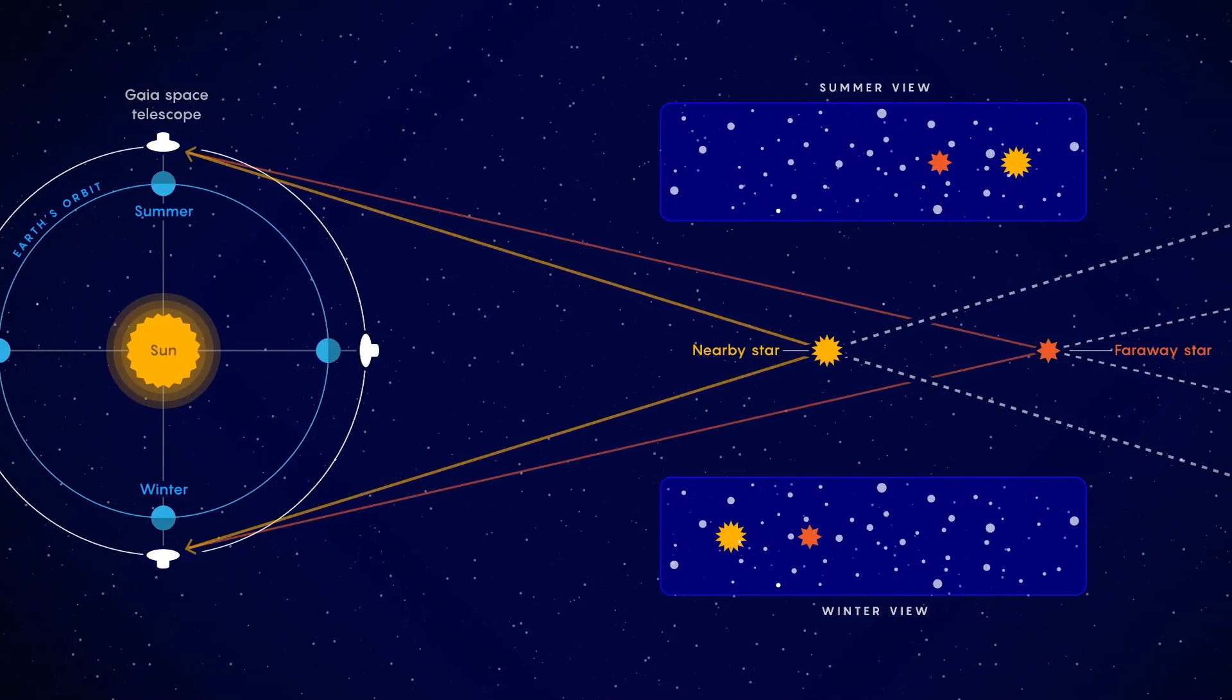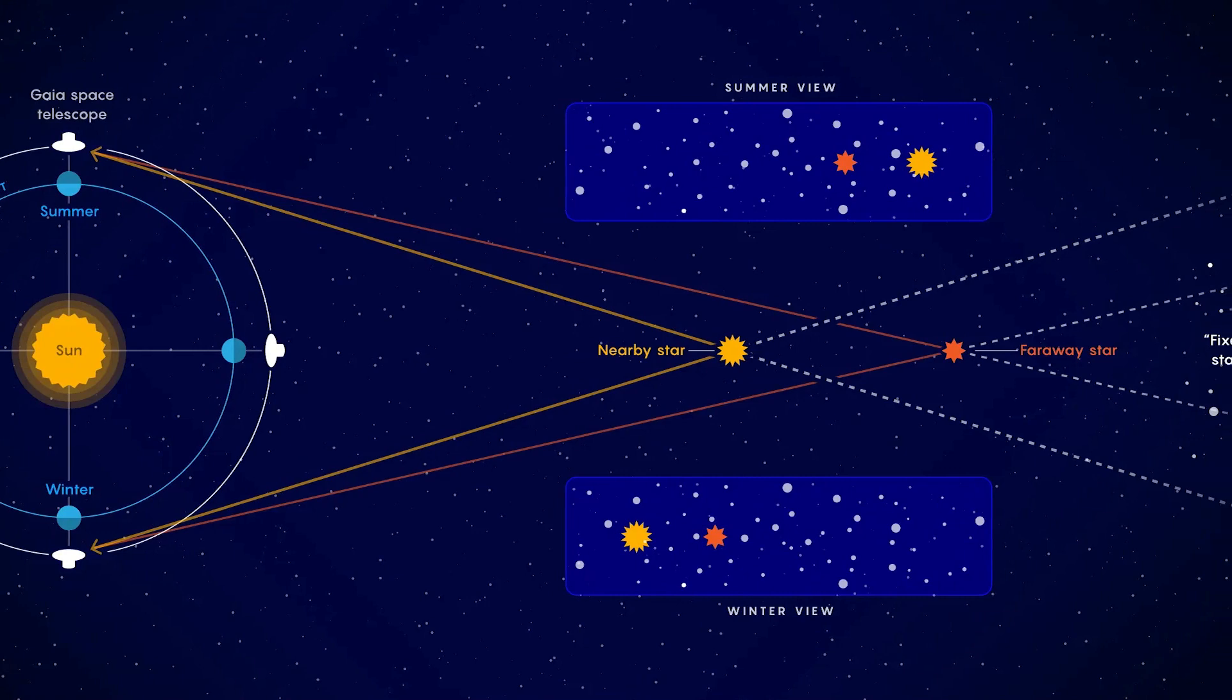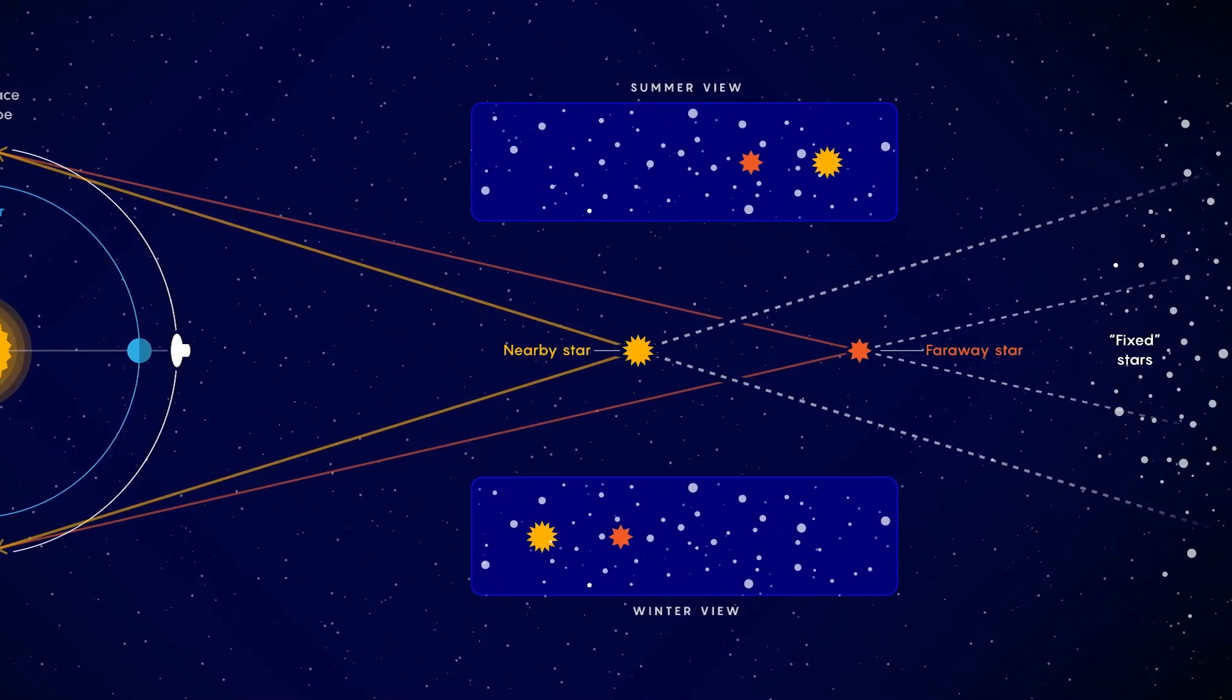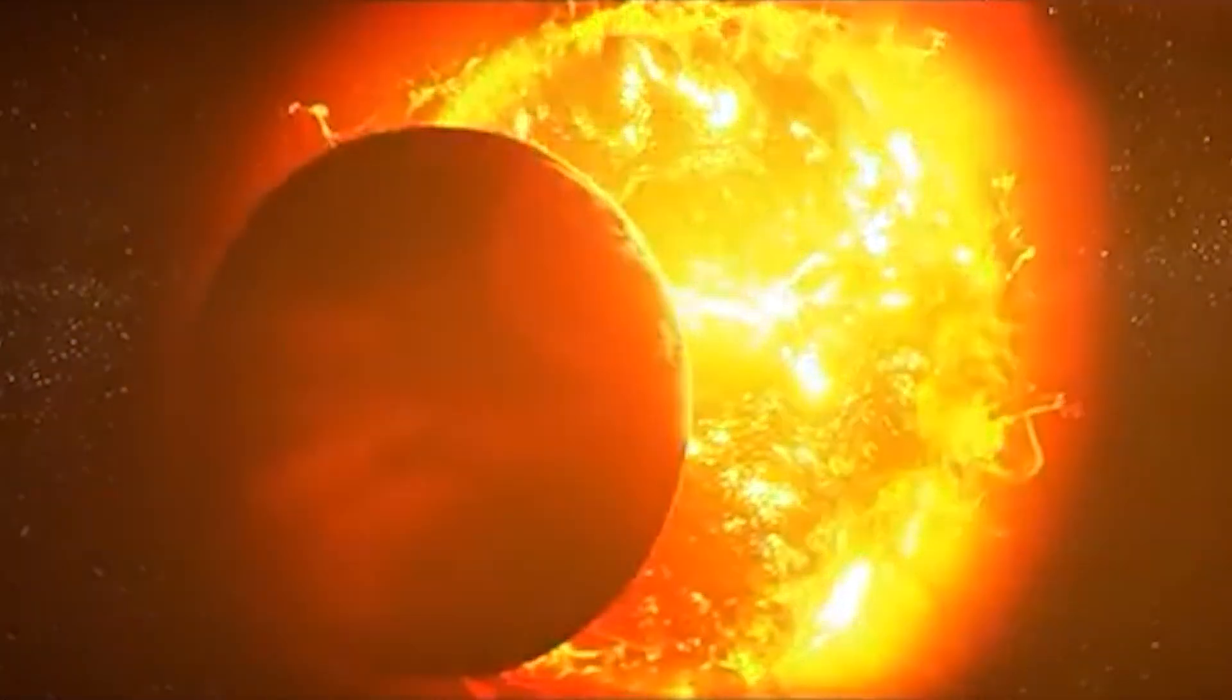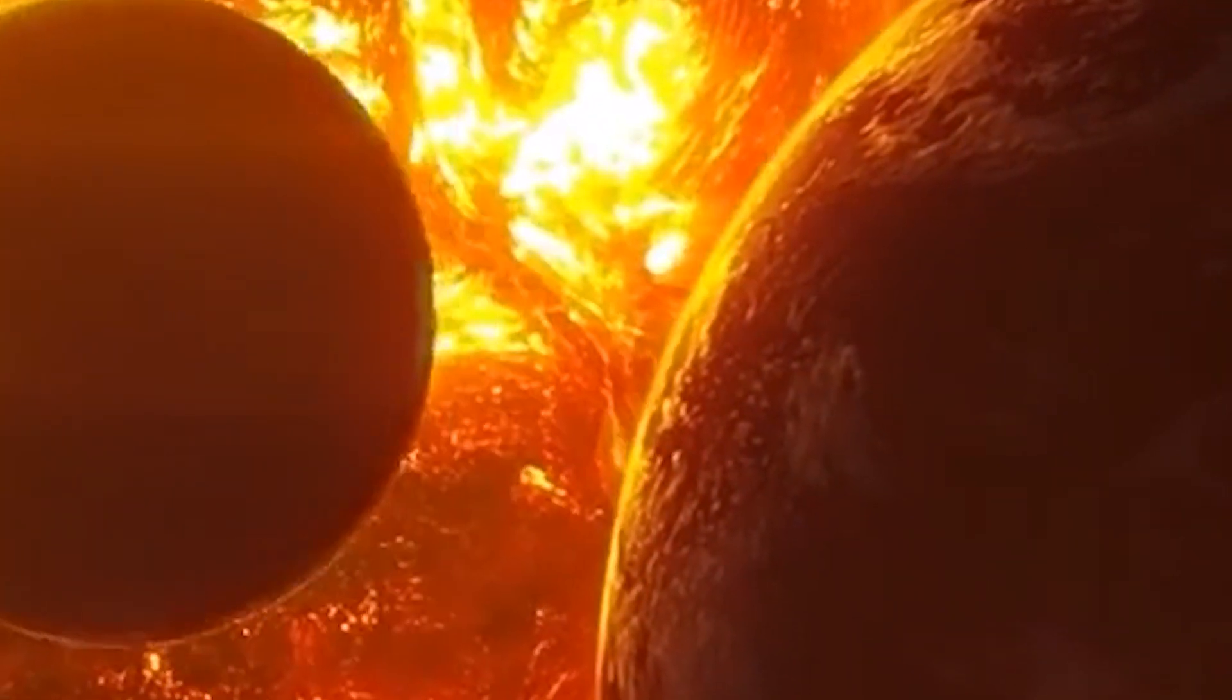However, as scientists get better at measuring things like the mass of the universe and the rate of its expansion, we'll get closer to knowing which of these scenarios is most likely. There's even a chance we'll discover something entirely new. But what we do know for sure, long before any of these fates befall the universe, our sun would have entered its red giant phase and consumed earth and all its inhabitants, if there are any.